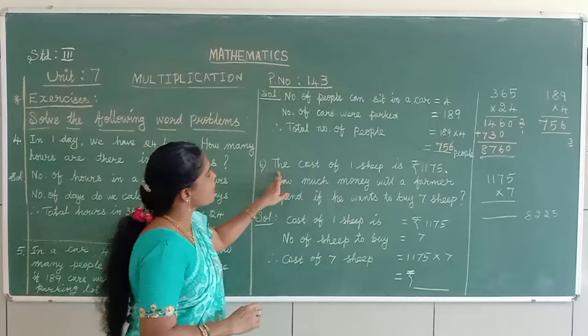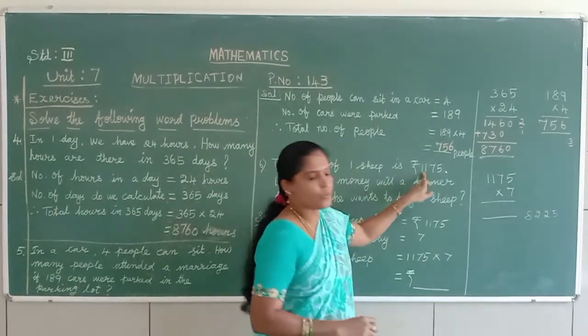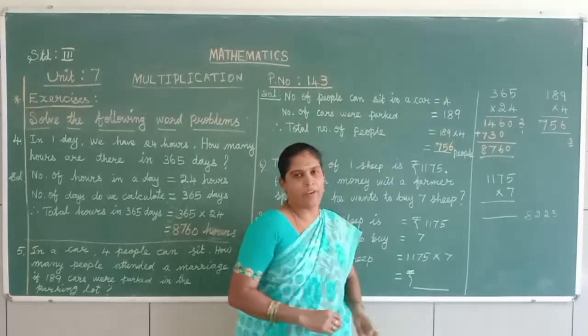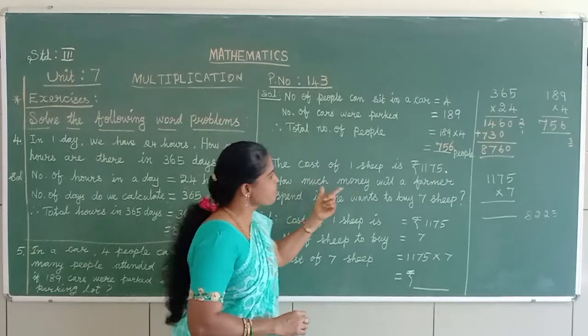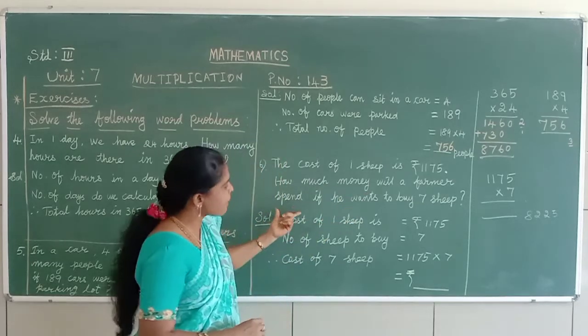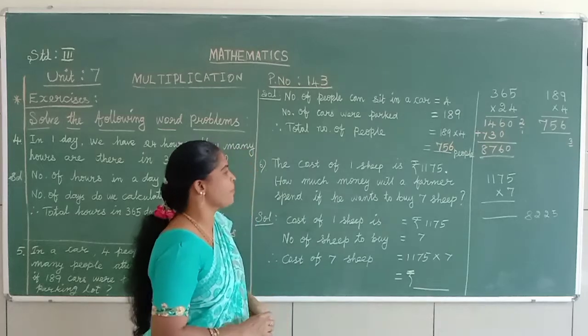Then come to 6 sums. The cost of one sheet is Rs.1,175. How much money will a farmer spend if he wants to buy 7 sheep? See?